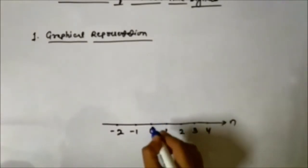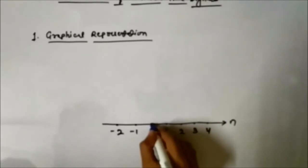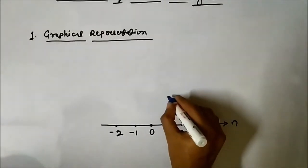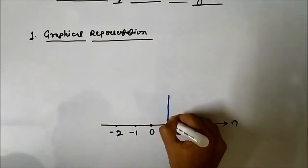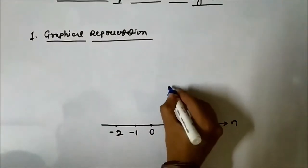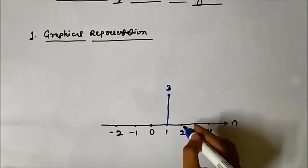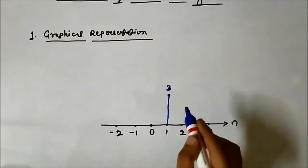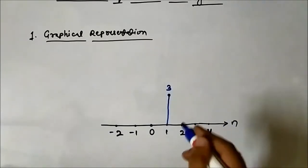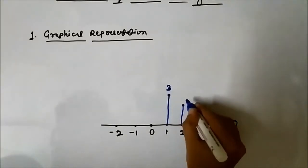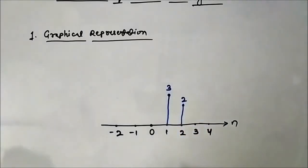The magnitude of the signal at time instant 0 is 0, represented by a dot. At time instant 1 the magnitude of the discrete time signal sample is 3, so we draw a vertical line with magnitude 3. At discrete time instant 2 the magnitude of the signal is 2, so this will be magnitude 2.